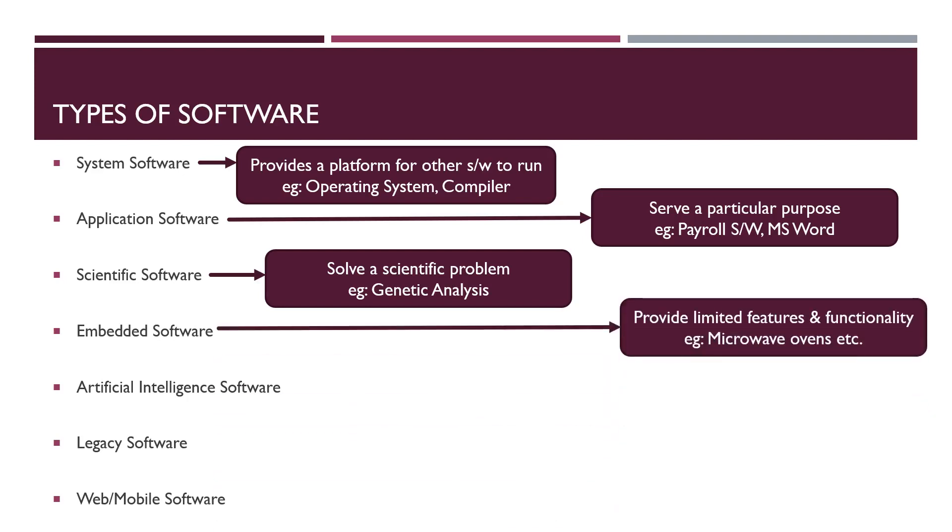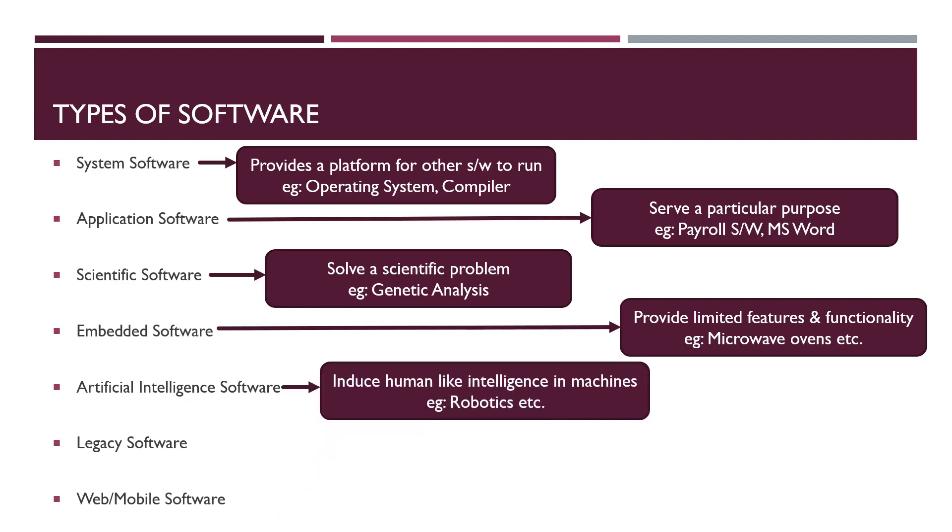Next is embedded software. It provides limited features and functionality. For example, microwave oven. Next one is artificial intelligence software. Artificial intelligence software are used to build the capability of human mind. In this type of software, complex algorithms are used by these, but does not contain numerical calculation.